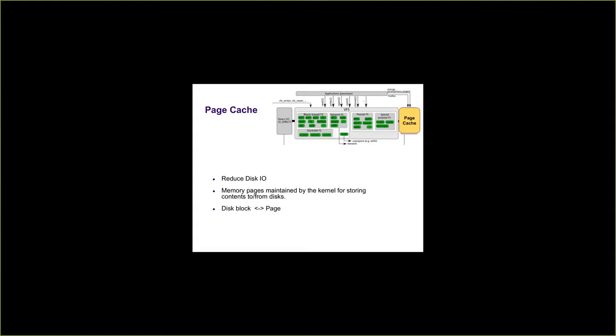Page cache, in simple words, are memory pages — memory frames maintained by the kernel for storing contents to or from the disk. Whenever we do file access or access from a disk block, it has to go through page cache. We never access the block of the device directly; we always read the block into the page cache first, and then applications use data that is in the page cache.